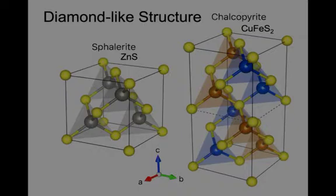In sphalerite, half of the carbons are replaced by zinc, and the other half by sulfur. Zinc has a plus two charge, sulfur has a minus two charge.